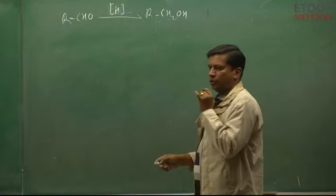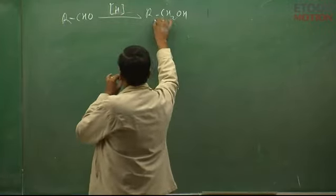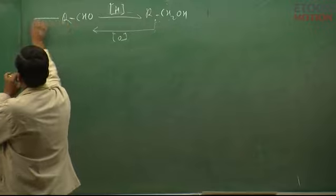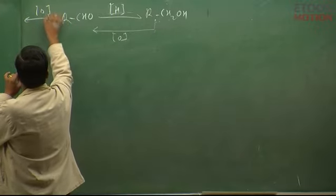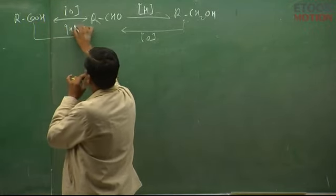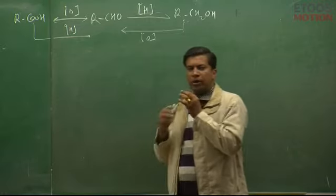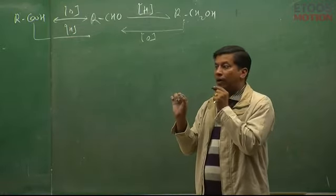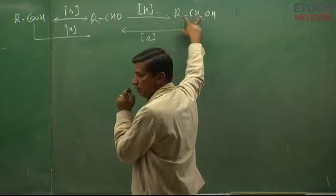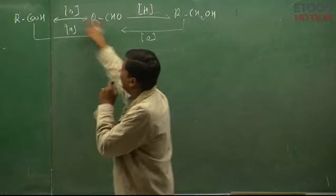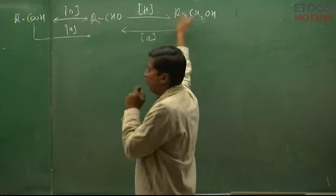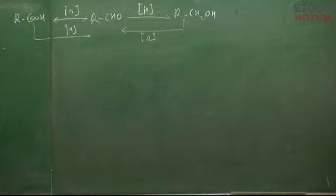When we reduce an aldehyde R-C-H=O, we get alcohol; when we oxidize it, we get carboxylic acid. So one molecule of aldehyde gives alcohol and another gives salt of carboxylic acid — one aldehyde is oxidized and reduced. Therefore Cannizzaro reaction is a disproportionation reaction.